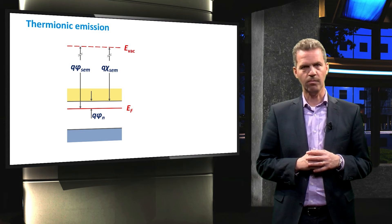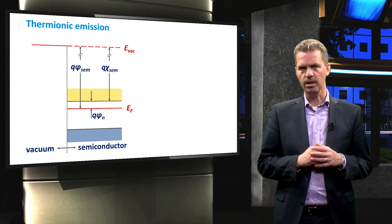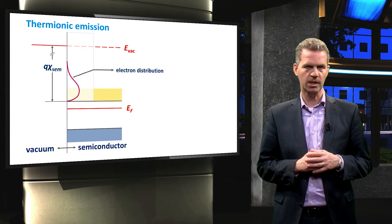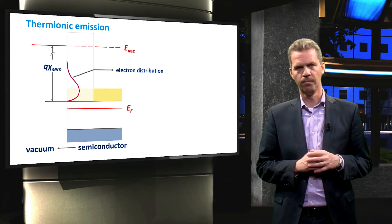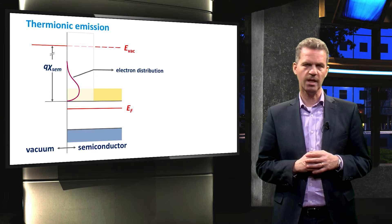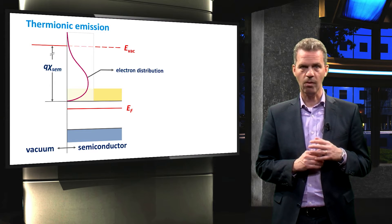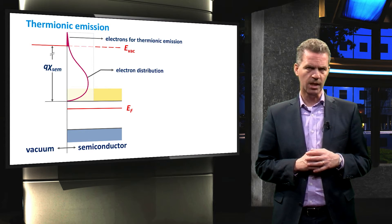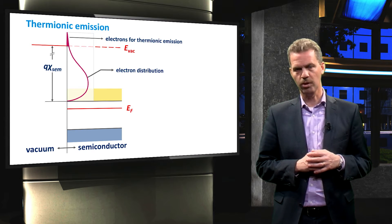Now suppose that the semiconductor is in contact on the left-hand side with vacuum. At a given temperature, the electron distribution as a function of energy in the conduction band has a drop-like shape. If the temperature is increased to sufficiently high values, this distribution becomes wider and we find that some electrons have a finite possibility to have an energy higher than the vacuum level. These electrons have so much energy that they can be emitted from the material — this process is called thermionic emission.